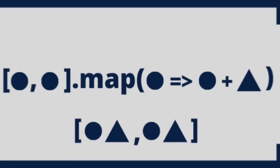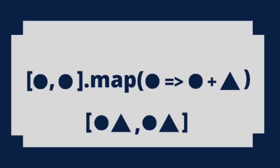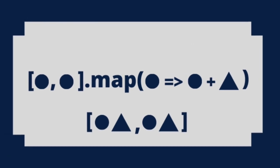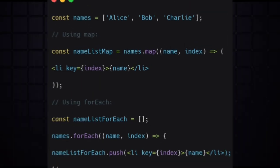On the other hand, map creates a new array by applying a function to each element in the original array, and it returns the resulting array.